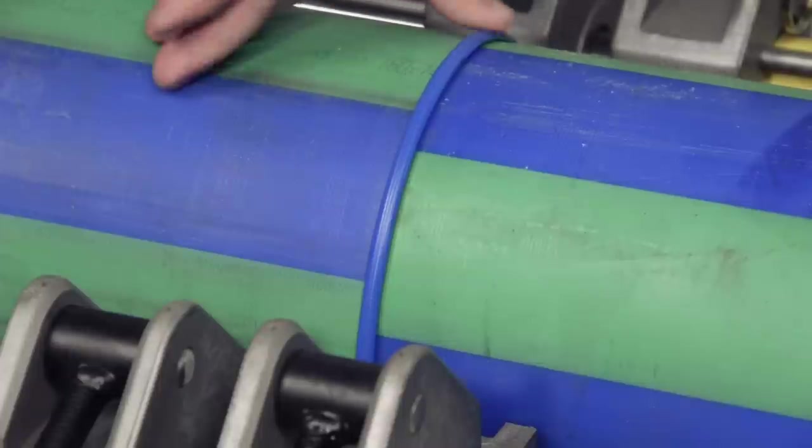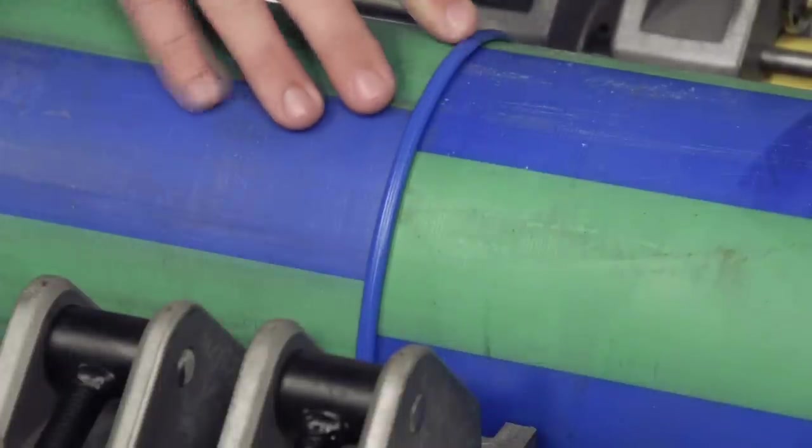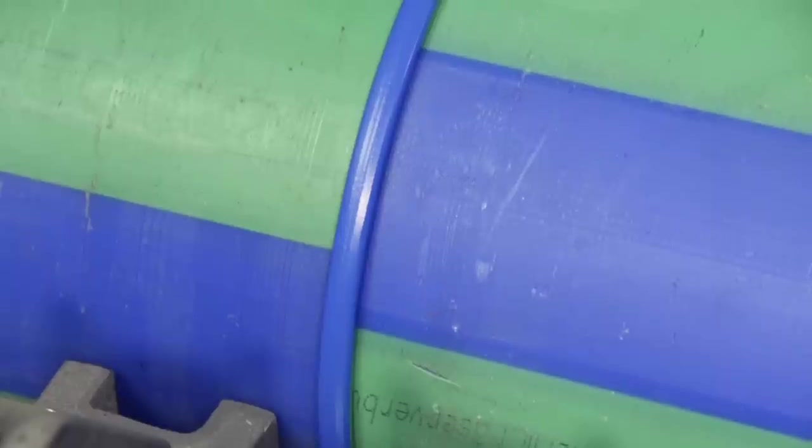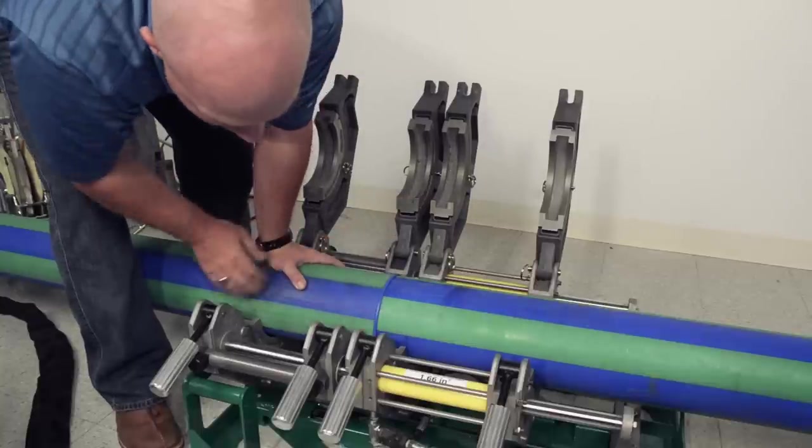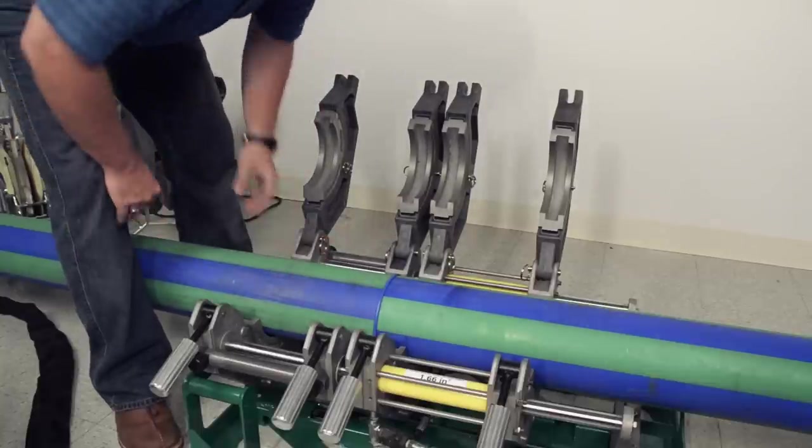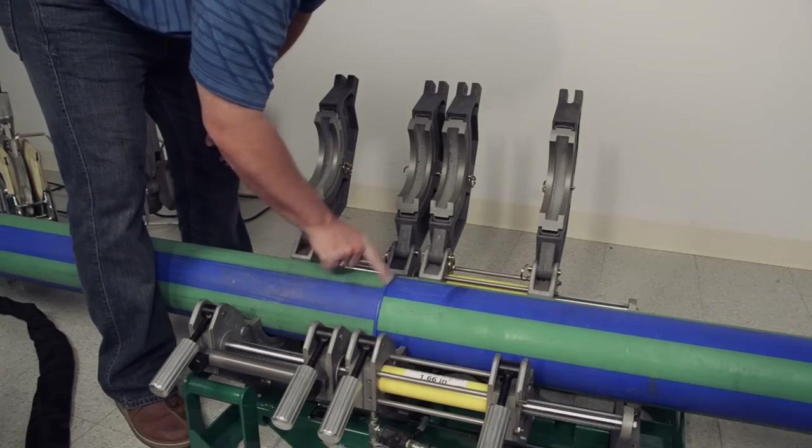Now we have one last step, and that is to inspect the joint. A good joint will have a single bead with uniform appearance on each side, and the bead will have rolled back touching the pipe. Check for any debris or pitting in the joint, and if all is well, move on to the next joint. If you notice anything outside the normal range though, cut the joint out and start over.